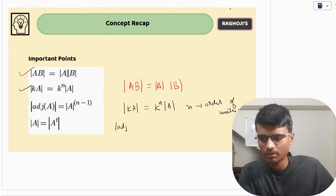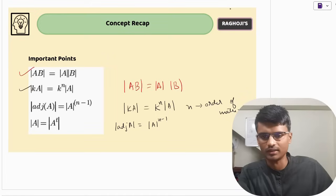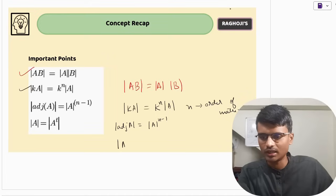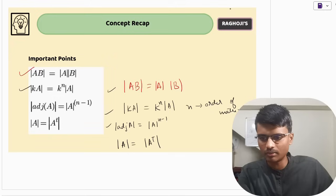Next, determinant of adjoint of A equals determinant of A raised to the power n minus 1, where n is the order of the matrix. Last one: determinant of A equals determinant of A transpose. These are the four properties that we will be using — please make a note of these properties.